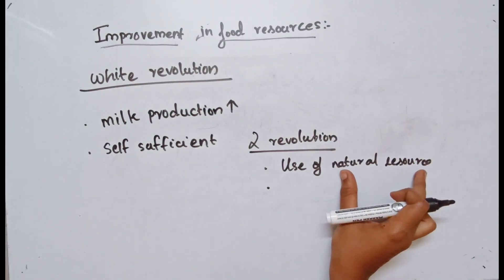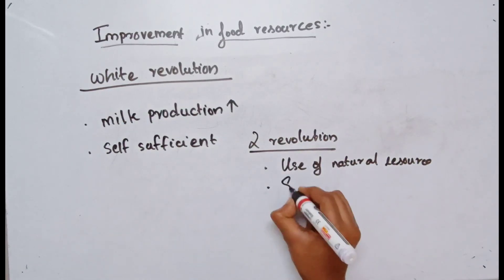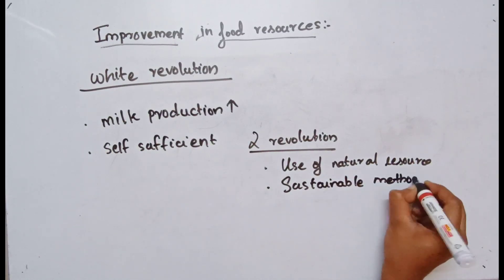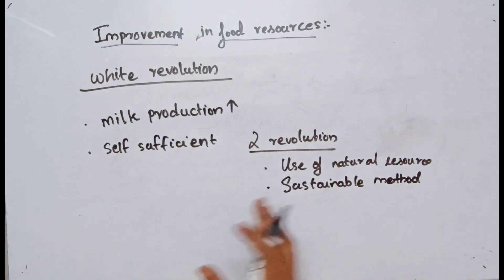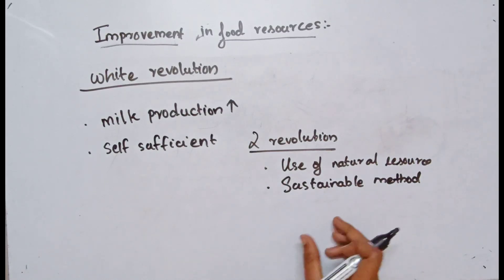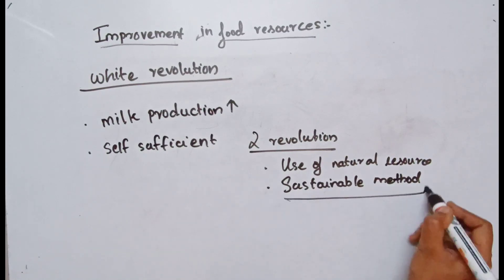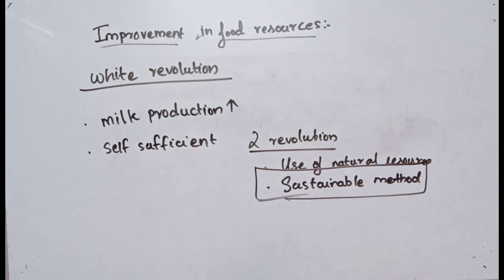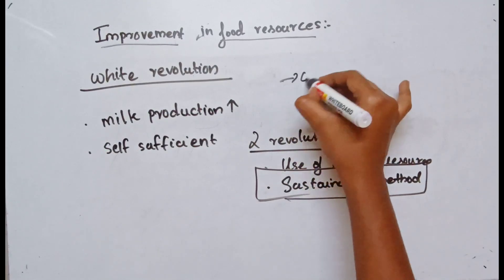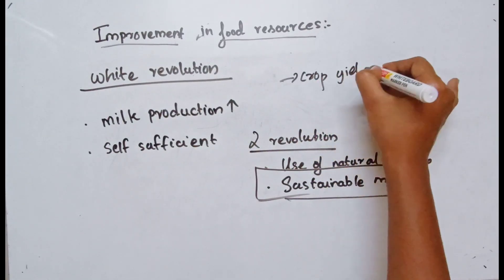We have to use sustainable methods. Through these revolutions, food production and milk production improved, and crop yield also improved. Crop yield refers to the amount we can harvest from a particular area.